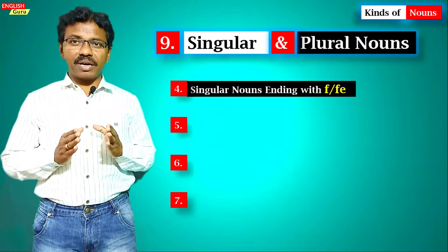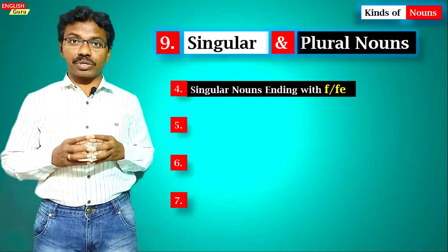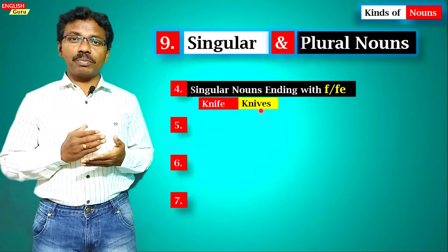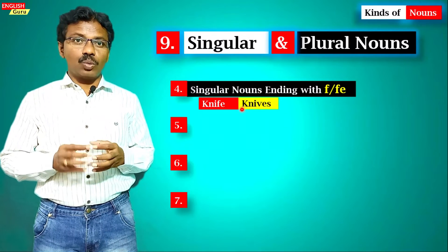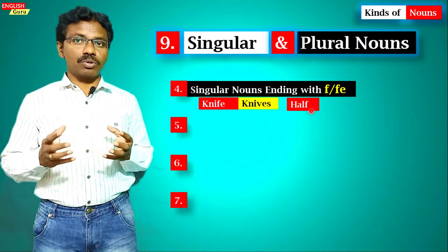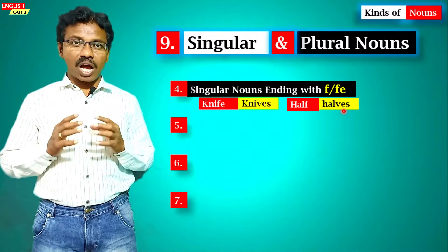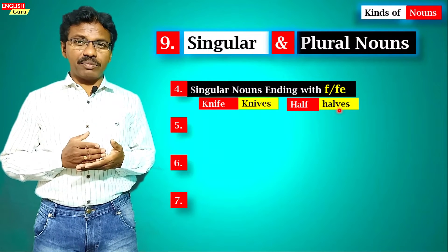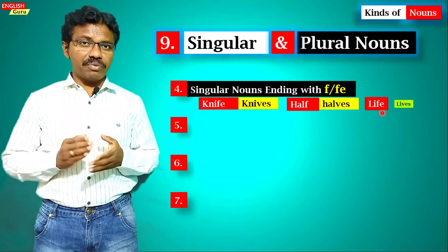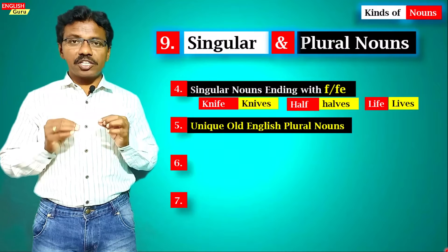Another rule: for singular nouns ending in 'f' or 'fe,' remove the 'f' or 'fe' and add 'ves.' For example, 'knife' ends in 'fe' — remove 'fe' and add 'ves' to get 'knives.' 'Half' ends in 'f' — remove 'f' and add 'ves' to get 'halves.' 'Life' ends in 'fe' — remove 'fe' and add 'ves' to get 'lives.'